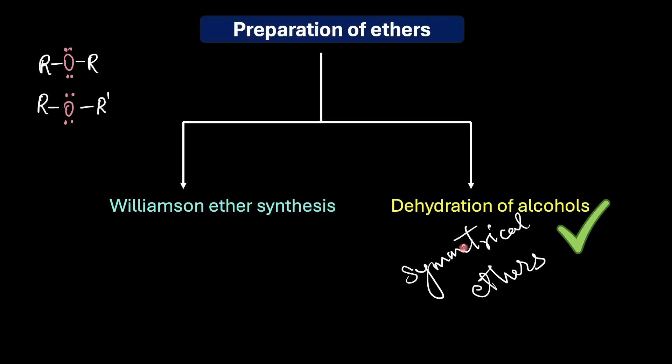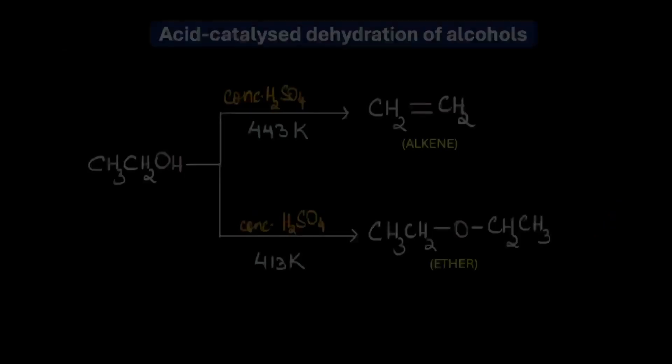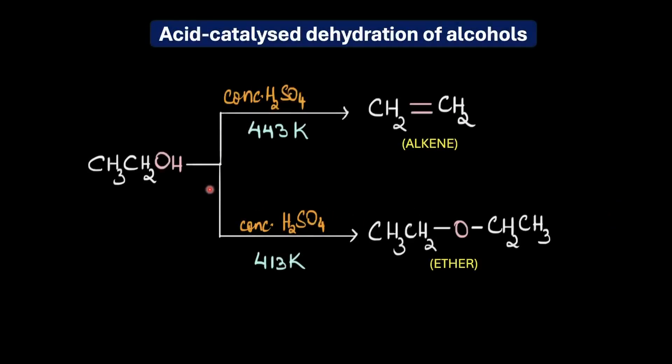Now if you remember in the previous video we saw that the acid-catalyzed dehydration gave us an alkene. For example, when we heated a primary alcohol like ethanol using a strong protic acid like concentrated sulphuric acid at 443 kelvins we got the corresponding alkene which is ethene.